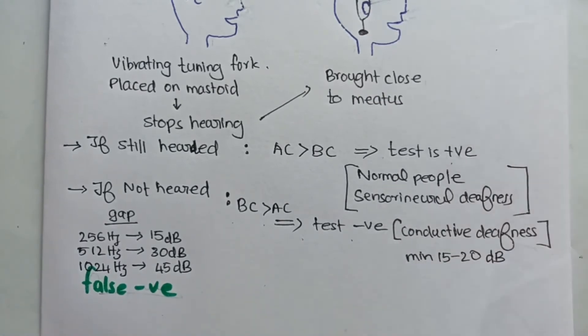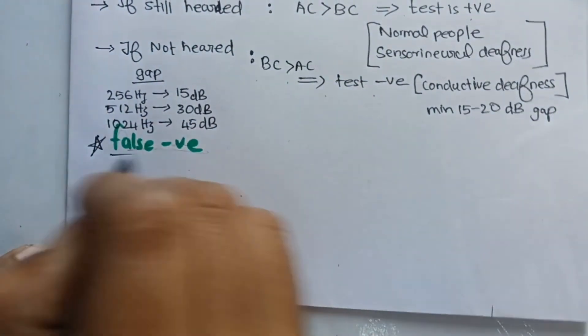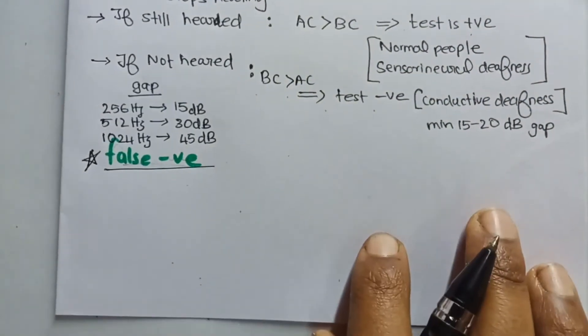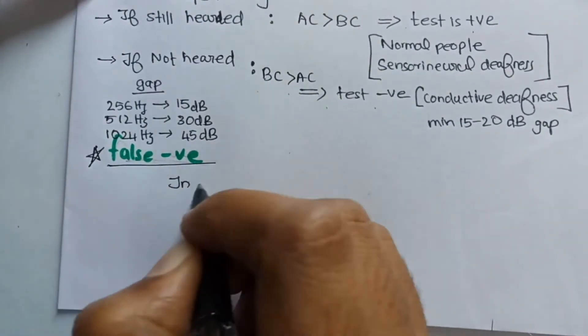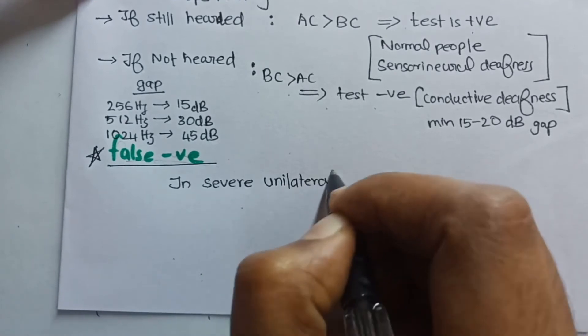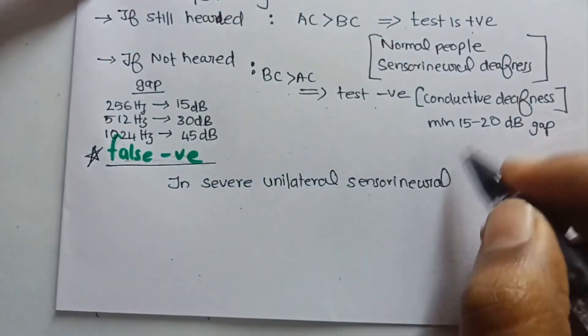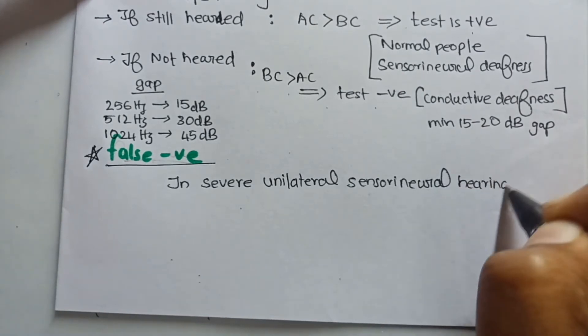Generally we can say there will be a minimum of 15 to 20 decibel gap. Now the false negative is repeatedly asked in exams. A false negative test is seen in severe cases of unilateral sensorineural hearing loss.